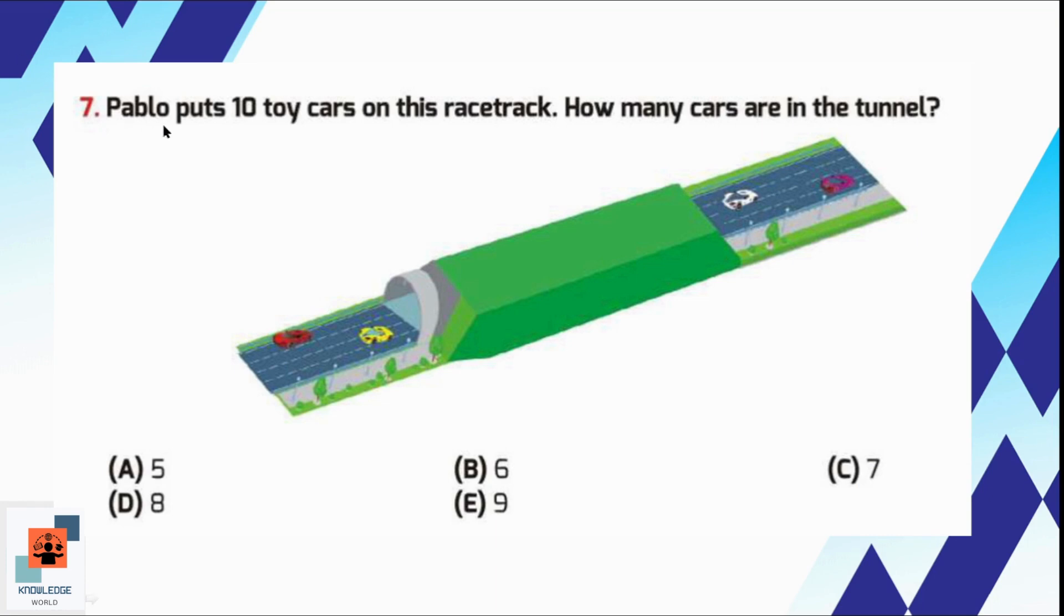Question number 7, Pablo puts 10 toy cars on this racetrack. How many cars are in the tunnel? There are 10 toy cars on the racetrack, but we can identify only 4 over here. So we are going to subtract 4 out of our total number of cars. 10 minus 4 is 6, meaning 6 cars are hidden under the tunnel. So option B is the correct option.